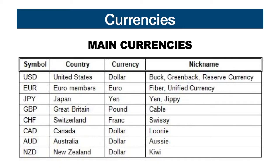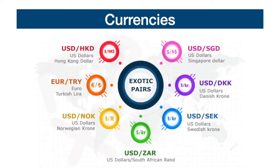We then have a huge list of exotic currencies — basically all the currencies of smaller or emerging economies. The most traded exotic currencies include the Hong Kong dollar, the Singapore dollar, the Turkish lira, the Danish krona, the Norwegian krona, the Swedish krona, and the South African rand. Other important currencies to consider for their large economies are the Chinese renminbi, the Indian rupee, the Brazilian real, the Russian ruble, and the Mexican peso.